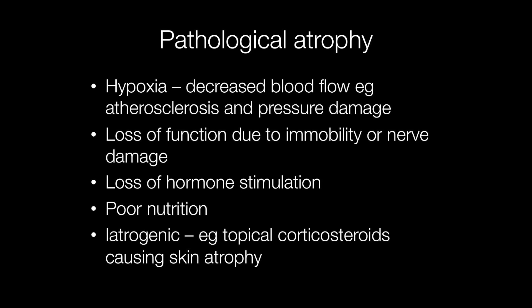Causes of pathological atrophy include hypoxia, where there is decreased blood flow, for example as a result of atherosclerosis where the arteries become narrowed due to plaques of atheroma, and pressure damage, for example pressure sores resulting in thinning of the skin. Loss of function due to immobility or nerve damage may result in atrophy of the muscles. Loss of hormone stimulation and poor nutrition may also result in atrophy, and atrophy could be iatrogenic, for example with application of topical corticosteroids causing thinning of the skin.